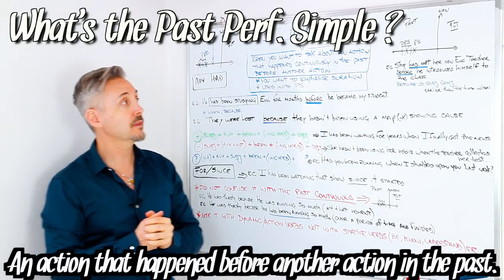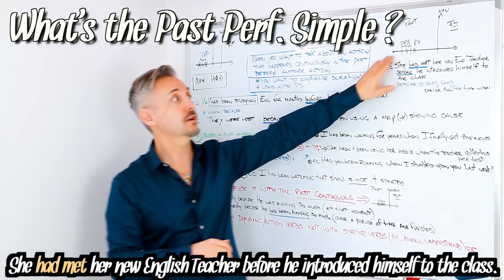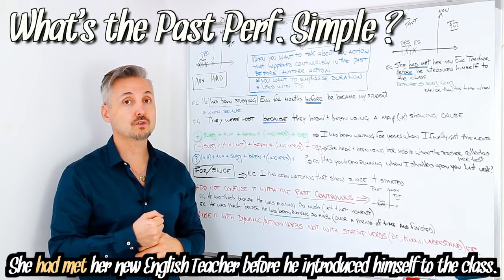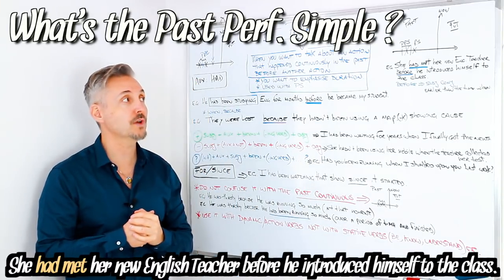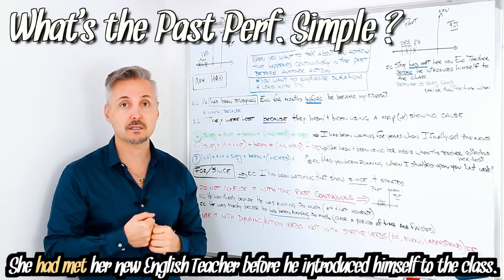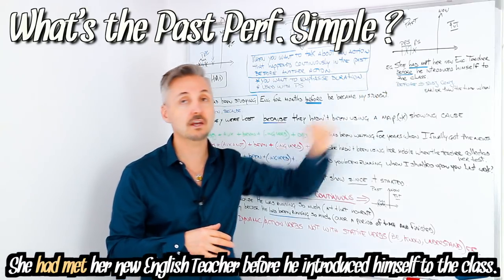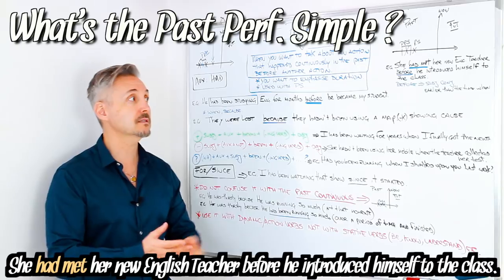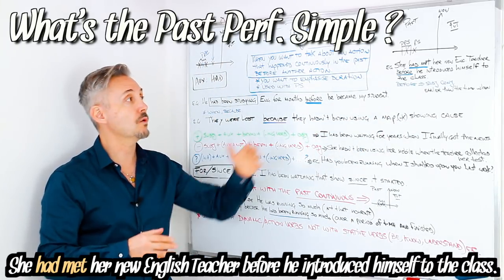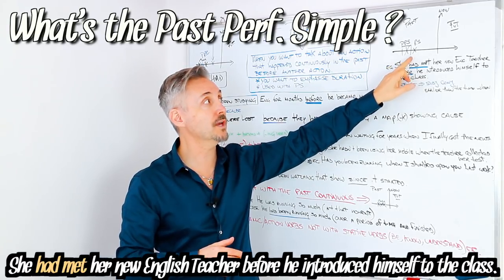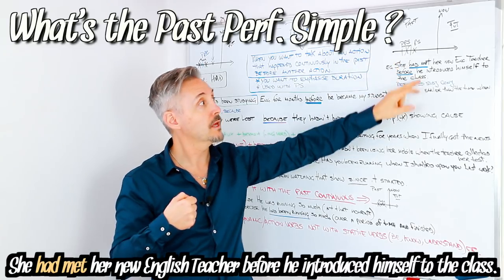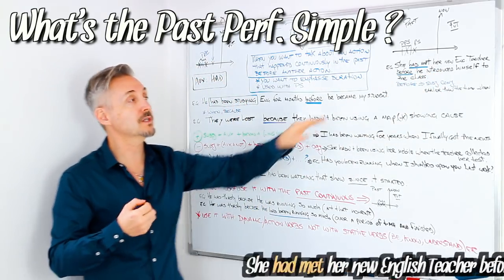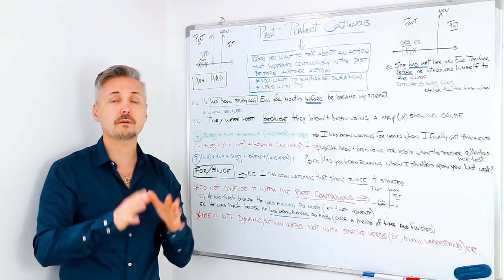I gave you an example: 'She had met her new English teacher before he introduced himself to the class.' Here we have 'before' — before is a subordinating conjunction. If you want to watch a lesson on subordinating conjunctions, you may click there. 'Before' means earlier than the time when something happened. So in that case, she had met her new English teacher earlier — it's an action that happened before another action. That's for the Past Perfect Simple.